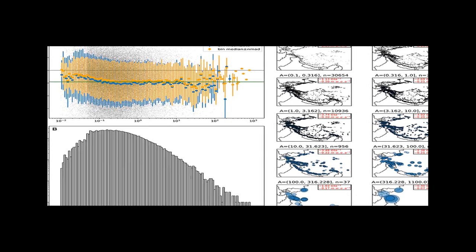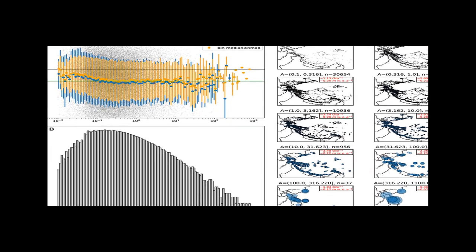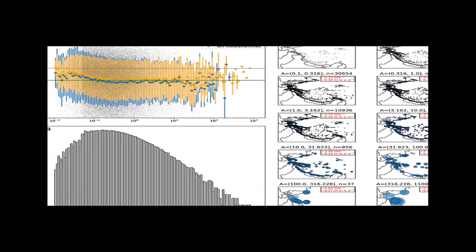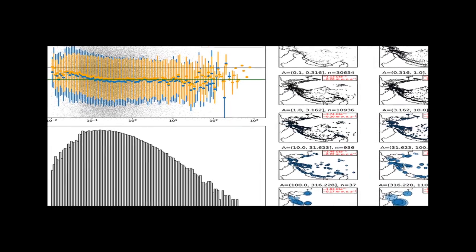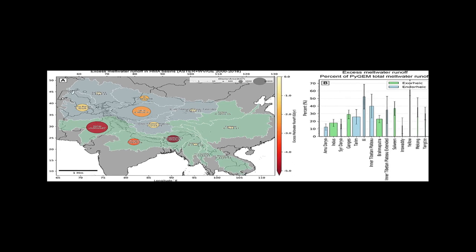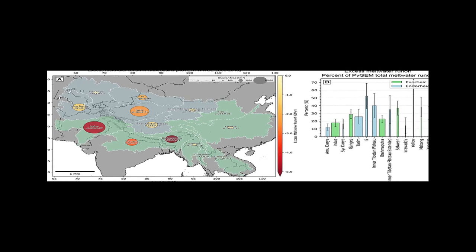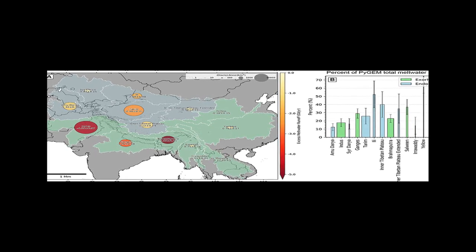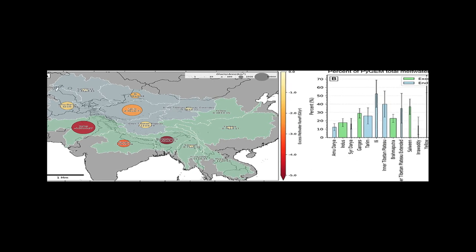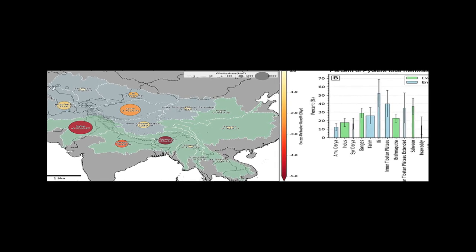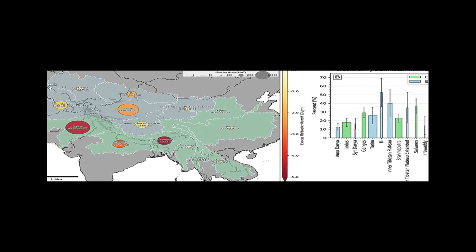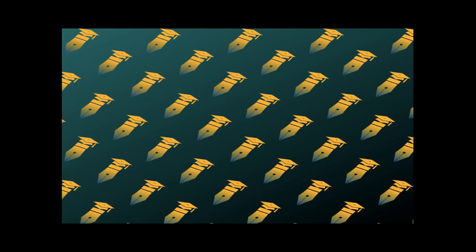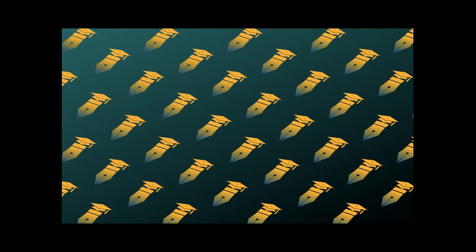The results also provide aggregated estimates for HMA glacierized subregions and hydrologic basins, and estimate that the range of excess glacier meltwater runoff due to negative glacier mass balance in each basin constitutes 12 to 53% of the total basin-specific glacier meltwater runoff.